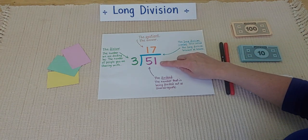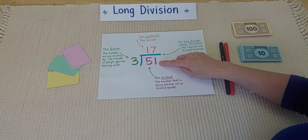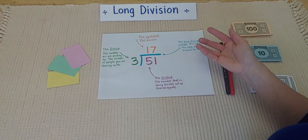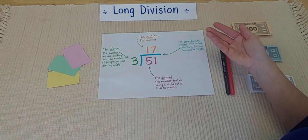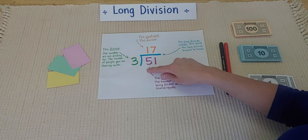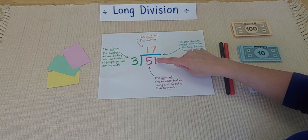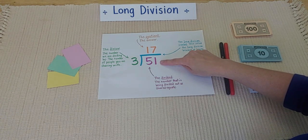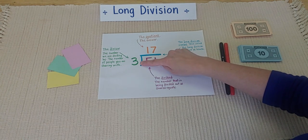51, that is the dividend. And the dividend is the number that's being divided out, or sharing equally. So, I'm going to pretend today that I have $51. And I'm going to share this $51 equally among my 3 friends, as best as I can.